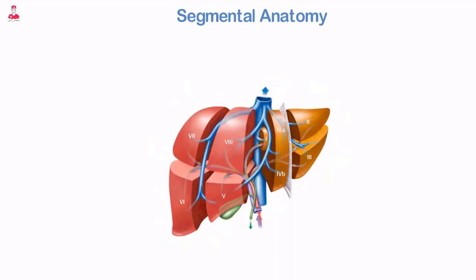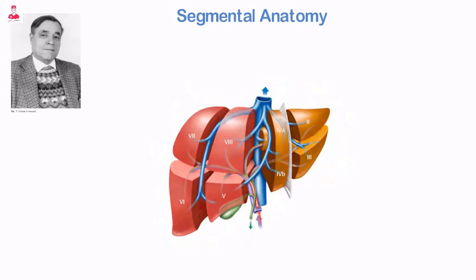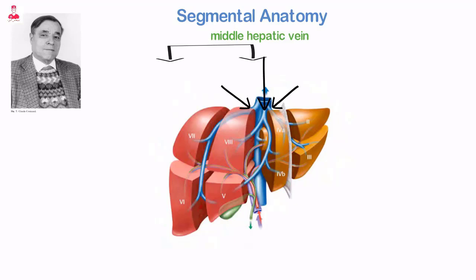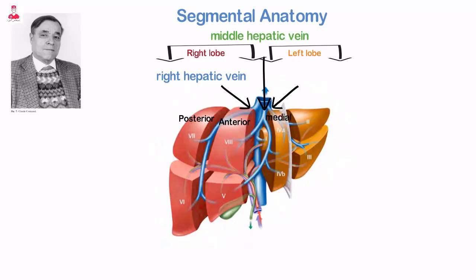Current practice favors the division of the liver into eight segments according to vascular supply, which can aid in surgical resection. According to the French anatomist Couinaud, the liver is divided into segments based on the branching of the portal and hepatic veins. The three main hepatic veins divide the liver longitudinally into four sections: the middle hepatic vein divides the liver into right and left lobes; the right hepatic vein divides the right lobe into anterior and posterior sections; and the left hepatic vein divides the left lobe into medial and lateral sections.